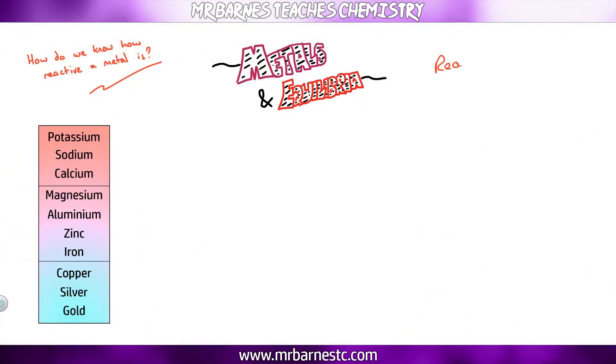Now how do you work out how reactive a metal is? You look at their reactions and there are three different types of reactions you can look at. The first one being reactions with acids. If you take any metal and react it with an acid, you'll get your salt and hydrogen gas. When hydrogen is given off you will see bubbles.